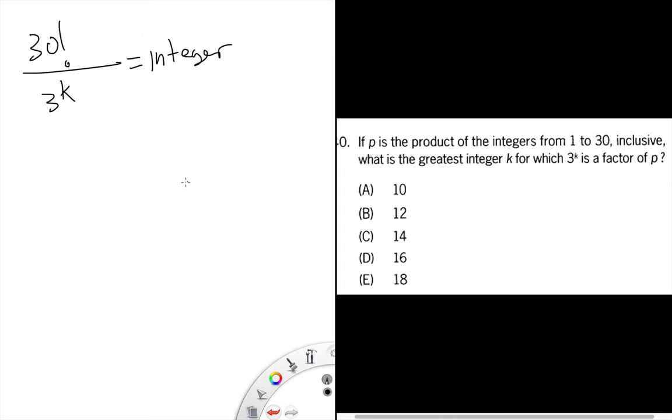They're asking for a value of k that would maintain this integer. K could be a bunch of things - it could be 1, that would work; 30 factorial divided by 3 is definitely an integer. It could be 2, it could be 3. There are a whole bunch of things it could be, but they're asking us for the maximum. What's the maximum value of k? Really asking us how many threes are in 30 factorial.